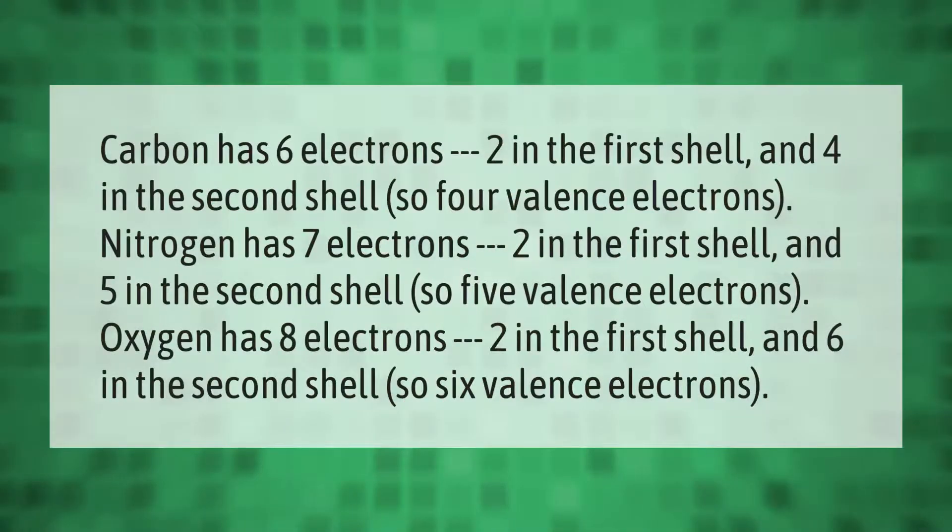Carbon has six electrons: two in the first shell and four in the second shell, so four valence electrons. Nitrogen has seven electrons: two in the first shell and five in the second shell, so five valence electrons. Oxygen has eight electrons: two in the first shell and six in the second shell, so six valence electrons.